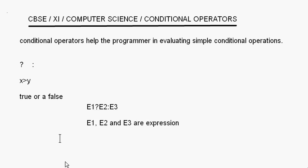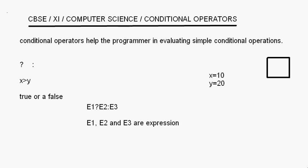Suppose we have two numbers: x is equal to 10 and y is equal to 20. If I want to write something like 'if the value of x is greater than y, then produce a result,' I write x greater than y — this is E1, the first expression. After E1 you give a question mark. In this case, 10 greater than 20 is false. E2 applies when the result is true, and after the colon you have E3, which is the false condition.